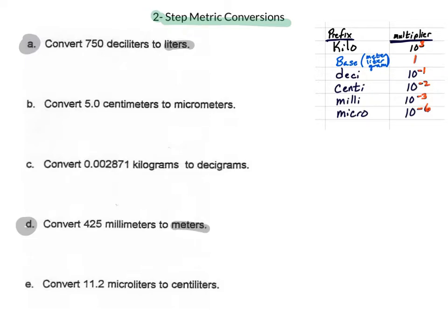Generally speaking, this is very similar to the one-step process. We're going to start by identifying what we already know — our starting point — and then look at our chart to see what the relationship is between the units we're starting with and the base unit. In the second step, we look for the relationship between the base unit and the unit we want to end with, making sure units cancel from the top of one fraction with the units on the bottom of the following fraction.